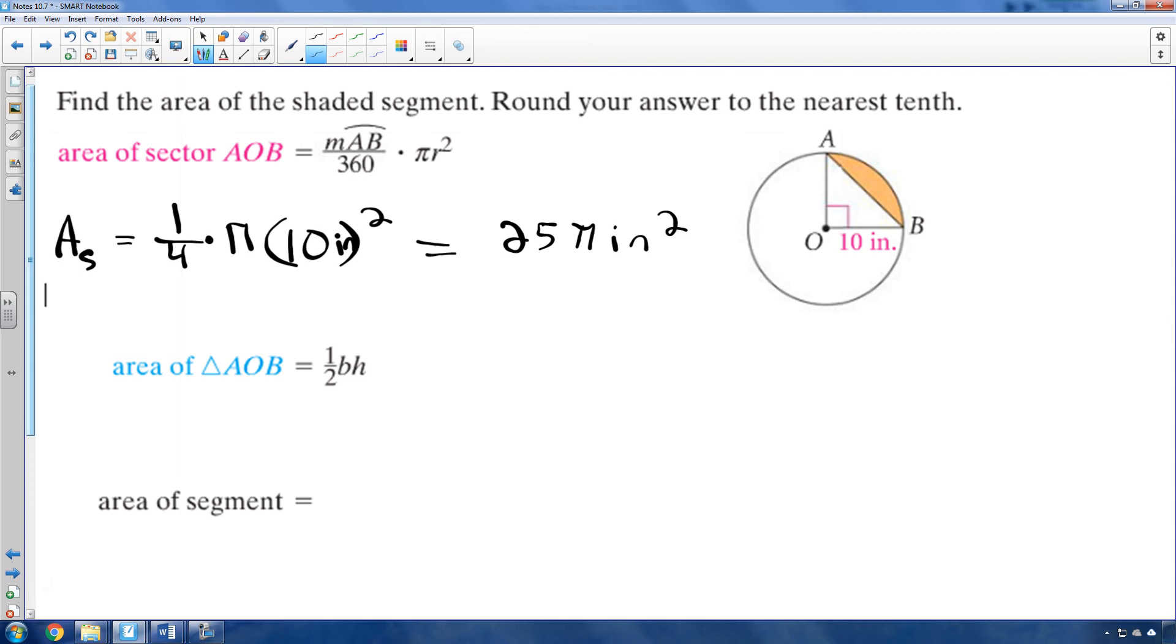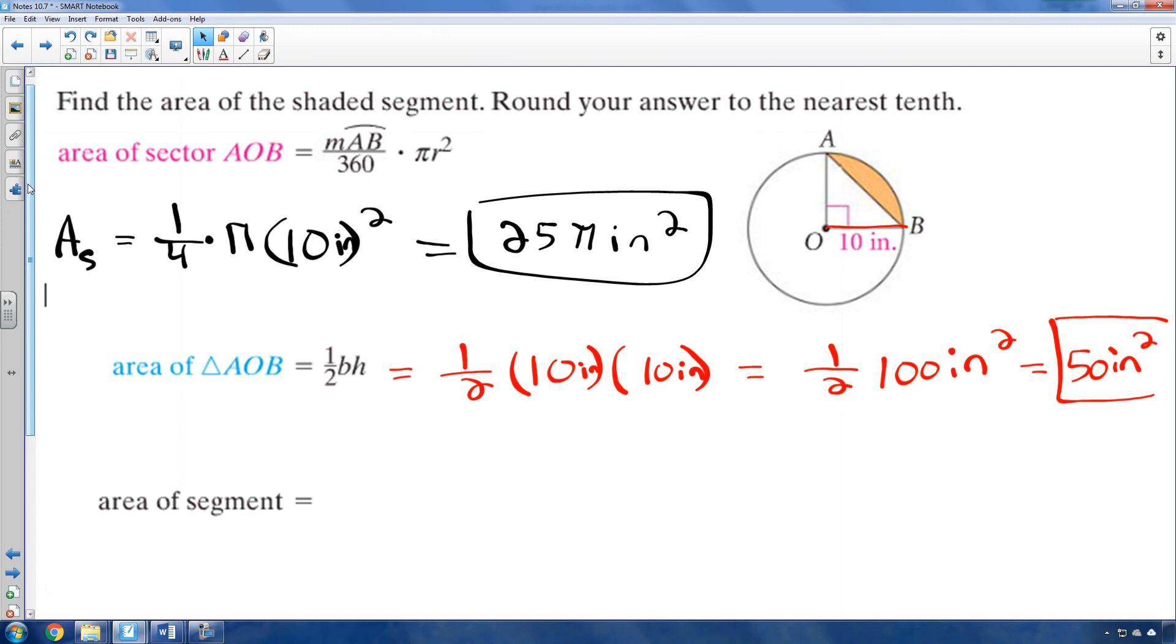So now we move on to find the area of the triangle because we've got to take away the triangle, because we just want that pizza crust. So the area of the triangle is 1 half base times height. So 1 half. What's the base of that triangle? 10. What's the height of that triangle? 10. Very good. By the way, it's 10 inches and 10 inches. So that means we're going to have inches squared in the final answer. So we're going to have 1 half times 100 inches squared. And 1 half of 100 is 50 inches squared. So we know that the area of the whole thing is right here. And then we found the area of the triangle. And if we subtract the red from the black, we'll have the orange left over.